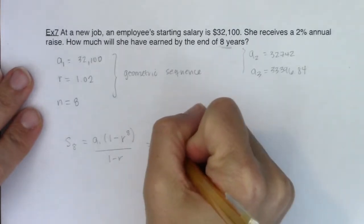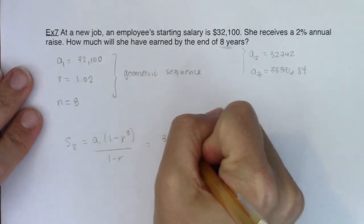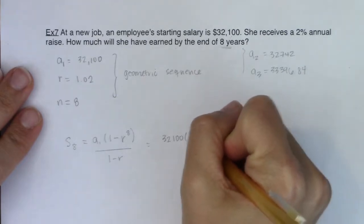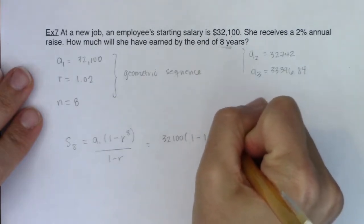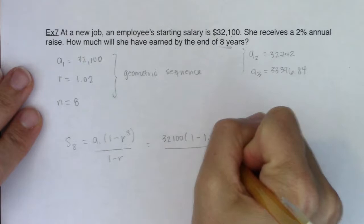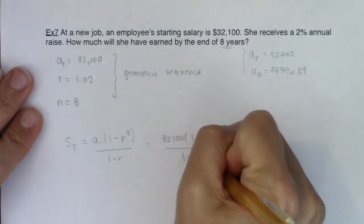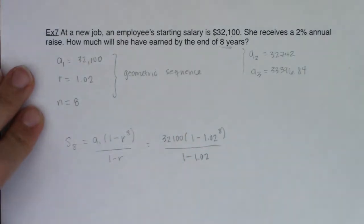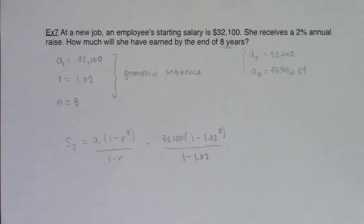So her initial salary was $32,100. I'm going to do one minus 1.02 to the eighth. And then I'm going to put that in ratio to one minus 1.02. Let's go crunch this on our calculator and be very careful with all of your parentheses, especially when you're dividing by that binomial in the denominator.